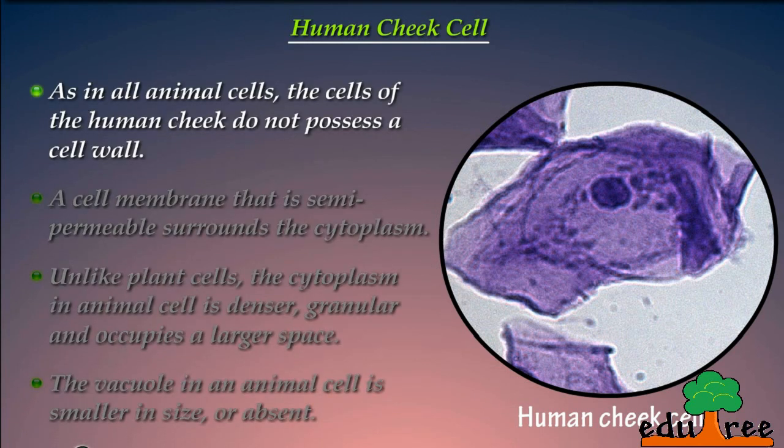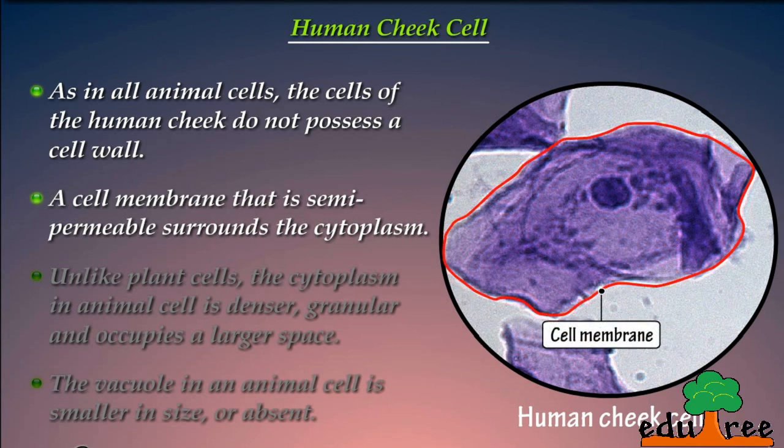As in all animal cells, the cells of the human cheek do not possess a cell wall. A cell membrane that is semi-permeable surrounds the cytoplasm.